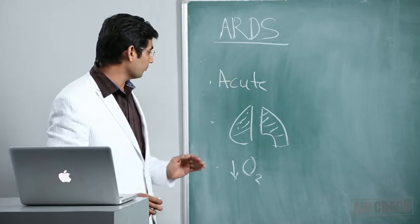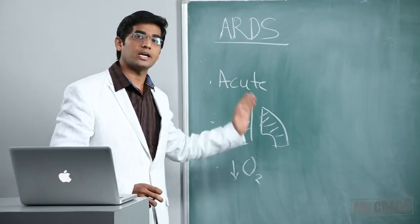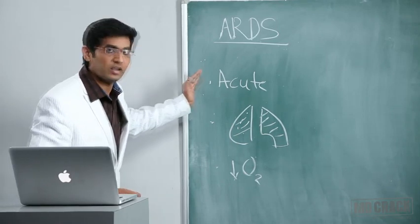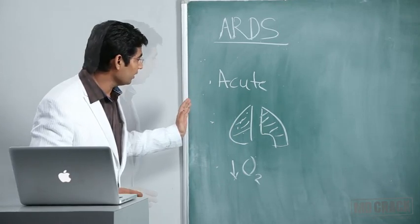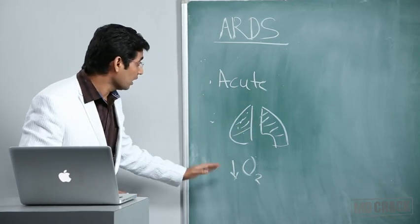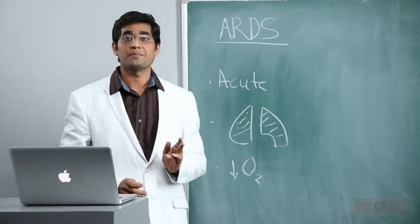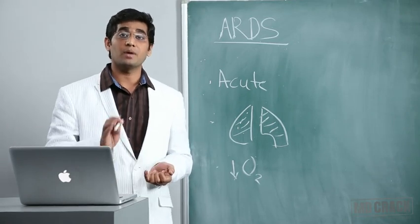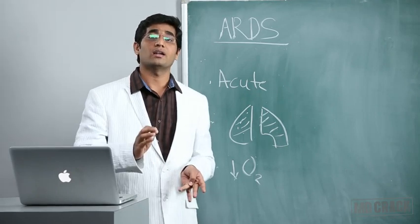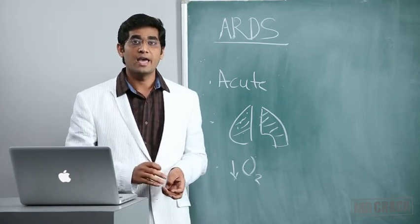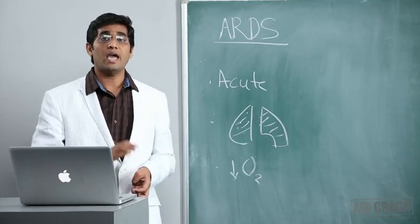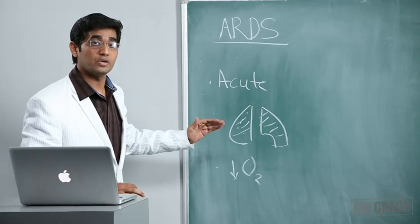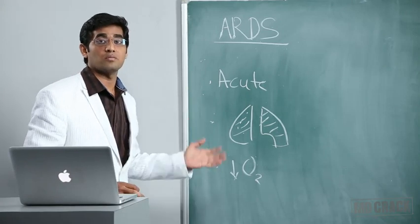Does presentation of acute respiratory failure with bilateral infiltrates on chest x-ray and hypoxemia indicate only ARDS? No, it can also indicate cardiogenic pulmonary edema from left ventricular failure or mitral stenosis, and alveolar hemorrhage. We need to differentiate ARDS from these other causes.